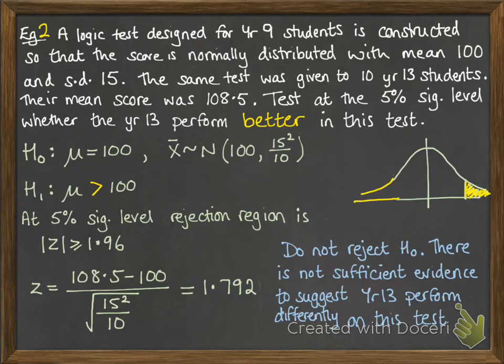So we're only looking at one tail now. We're testing whether it's better than. So we'll have 5% at the top there. Our critical value now becomes 1.645, so z has to be greater than or equal to 1.645.